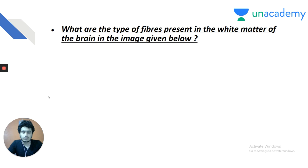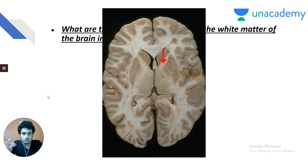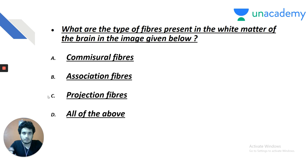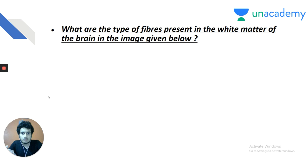Question 2 is a basic question tested multiple times, including NEET 2018: what type of fibers are present in the white matter of the brain shown in the image? Options are: A) commissural fibers, B) association fibers, C) projection fibers, D) all of the above. The image depicts the internal capsule, and the type of fibers in the internal capsule are projection fibers.